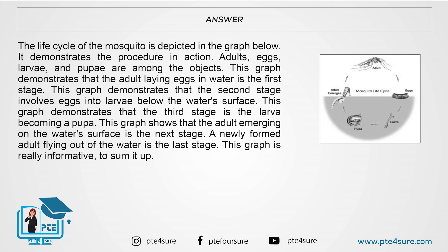The life cycle of the mosquito is depicted in the graph below. It demonstrates the procedure in action. Adults, eggs, larvae, and pupae are among the objects. The adult laying eggs in water is the first stage. The second stage involves eggs into larvae below the water's surface. The third stage is the larva becoming a pupa. The adult emerging on the water's surface is the next stage, and a newly formed adult flying out of the water is the last stage. This graph is really informative to sum it up.